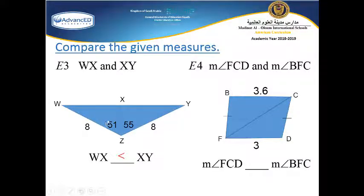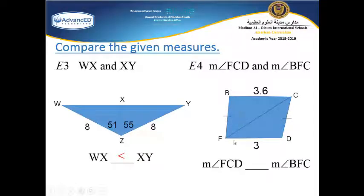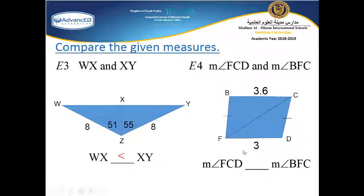Looking at the next question: side BF is congruent to side CD in the other triangle, and side CF is common to both triangles. There are two sides of the first triangle congruent to two sides of the second. The third side is 3, opposite to angle FCD, and the side 3.6 is opposite to angle BFC. Since side 3 is smaller than side 3.6, angle FCD is less than angle BFC.